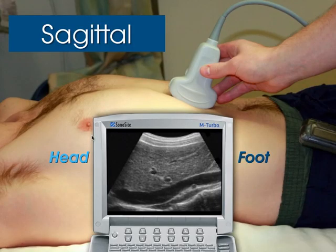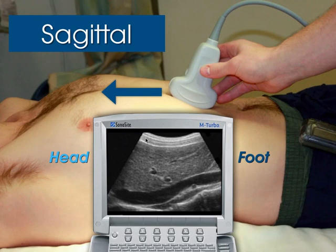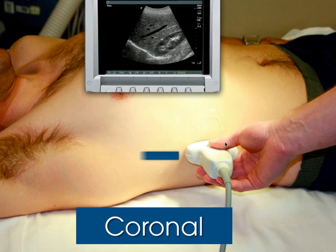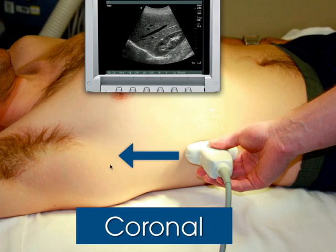The basic scanning planes: the sagittal plane has the indicator aimed toward the patient's head — sagittal means long axis when approaching anteriorly, with superior toward the head and inferior toward the feet. If you move the probe to the side of the body while still longitudinal, you now have a coronal plane, where lateral and medial replace anterior and posterior, while superior and inferior remain the same. The indicator still points toward the patient's head.